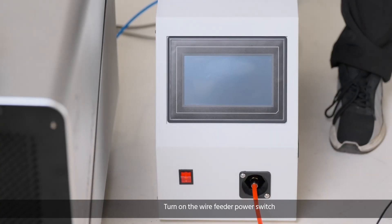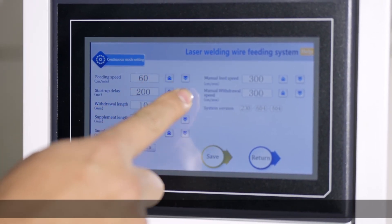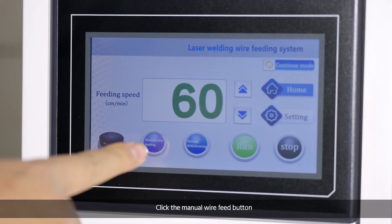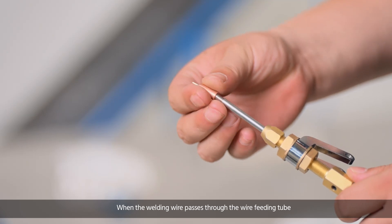Turn on the wire feed power switch. Click the setting menu to switch the system. Click the manual wire feed button when the welding wire passes through the wire feeding tube.